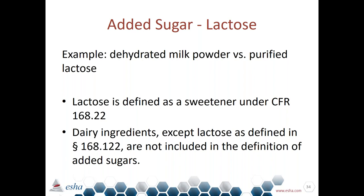Regarding added sugar and lactose: lactose is actually defined as a sweetener under CFR 168.22, which means it is not exempt from the added sugar rule. However, other dairy products — except for isolated lactose — are not included in the definition of added sugar. So dehydrated milk powder would not be considered added sugar, but if the lactose is purified and isolated, it is considered added sugar, already defined as a sweetener in 21 CFR 168.22.